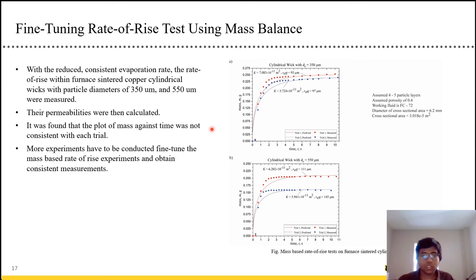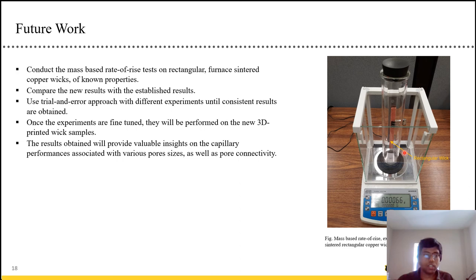And we tried the rate of rise, the mass-based rate of rise on the cylindrical wick structure. There's two different types. There is a 550 micrometer particle diameter wick and 350 micrometer particle diameter wick. And we got the following graphs. As you can see the blue one and the red one are two different trials. And they are not the exact same. So this is the problem we are facing right now. The experiments are not consistent for some reason. And we believe that's due to some fluid evaporation that's taking place somewhere.